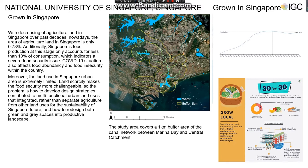Hi everyone, this is Tim from National University of Singapore. Our project is Grown in Singapore. With the decreasing of agricultural land in Singapore over the past decades, nowadays the area of agricultural land is less than 1%. Singapore's food production at this stage only accounts for less than 10% of consumption, which indicates a severe food security issue. Land use in Singapore's urban area is extremely limited, and land scarcity makes the food issue more challenging.